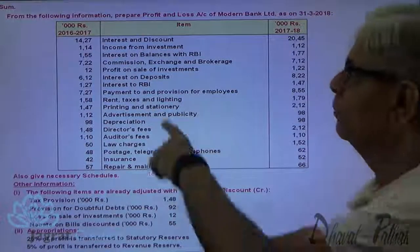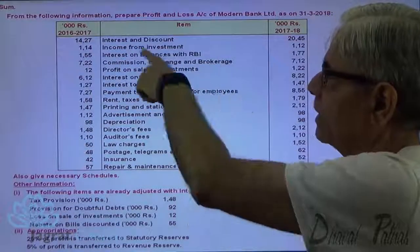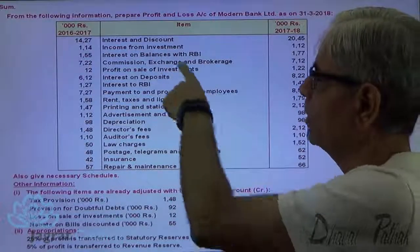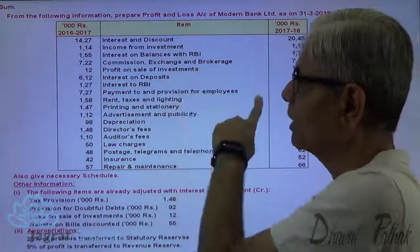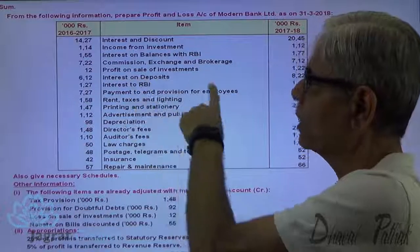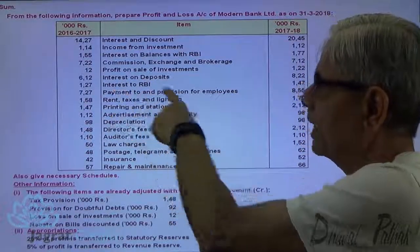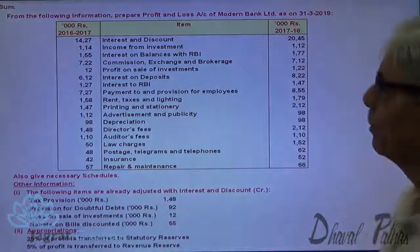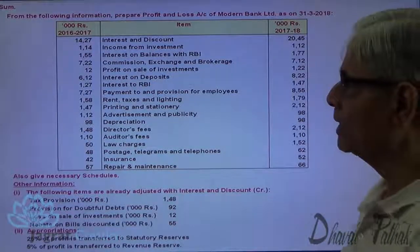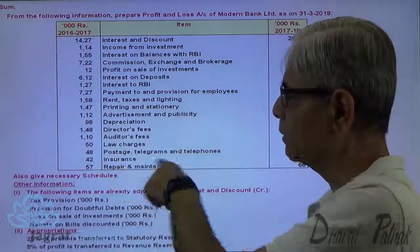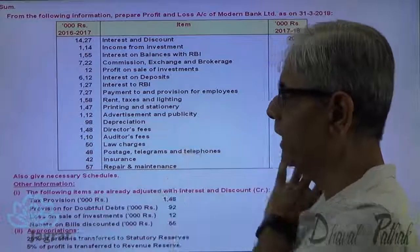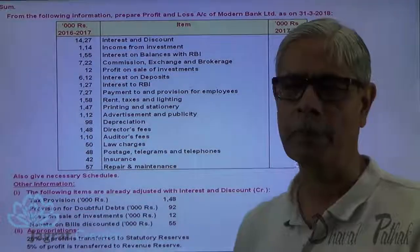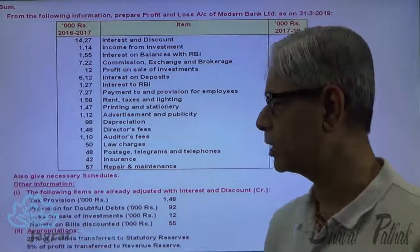The items given include interest and discount, income from investment, interest on balance with RBI, commission, exchange, brokerage, profit on sale of investment, interest on deposits, interest to RBI as expense, and payment to and provision for employees, rent, and taxes — all are expenses given. We are also required to prepare schedules 13, 14, 15, and 16.